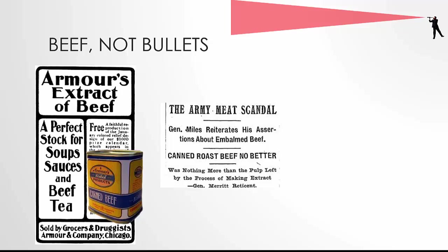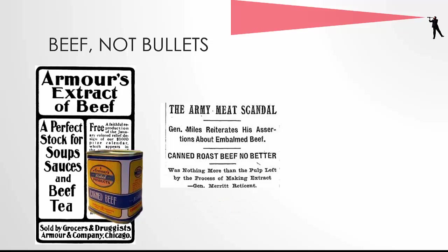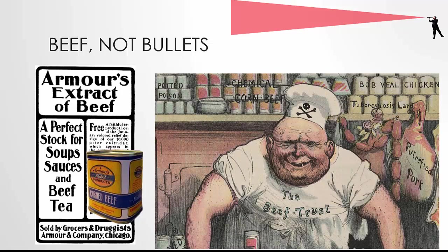In the summer of 1898, an Army inspector tested the Armour meat, which had been stamped and approved by a government inspector. This second inspector found 751 cases containing rotten meat, and in just the first 60 cases he opened, he found 14 tins had already burst open. The report noted the 'effervescent, putrid contents were distributed all over the cases.' Thousands of soldiers got food poisoning, and it is possible that some number of those men died from ingesting rotten beef. The scandal created bad press for the meatpacking industry and started calls for government regulations, the first of which would come into effect in 1906.